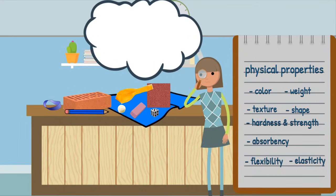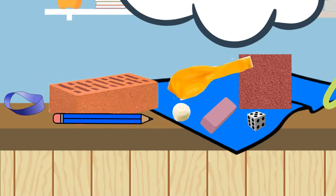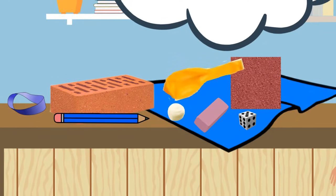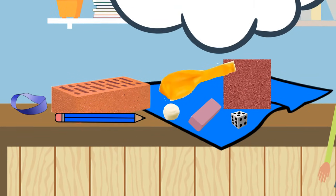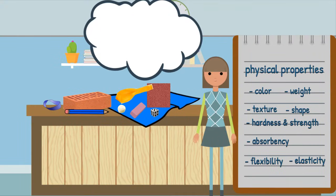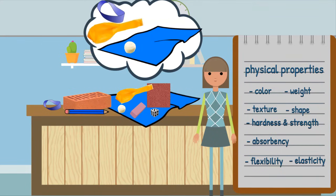I see flexible and elastic items here. Which items could bend without breaking? There are many. The balloon and rubber band are elastic, and the towel, cotton ball, and sandpaper are flexible.